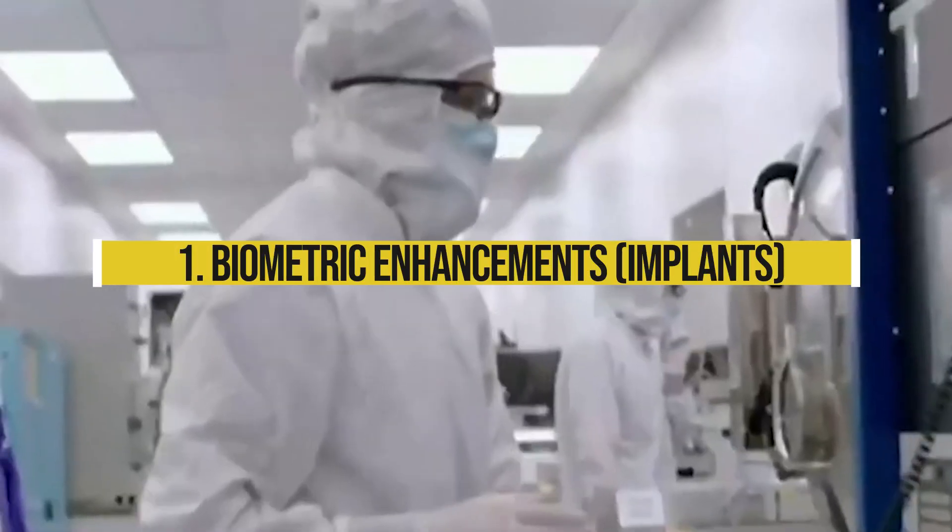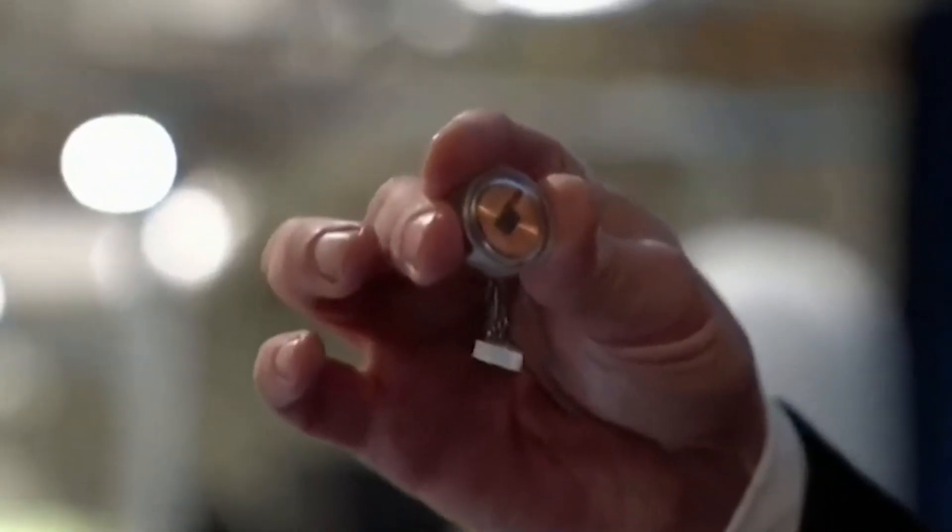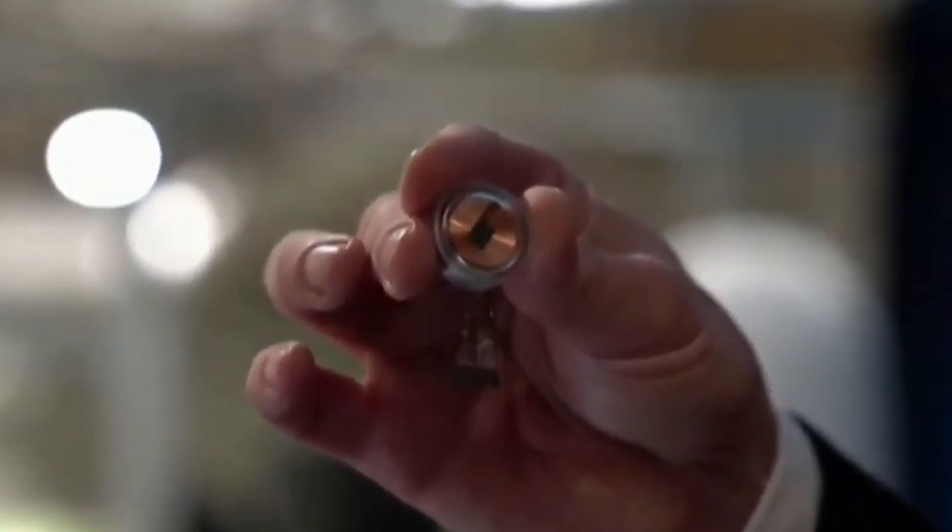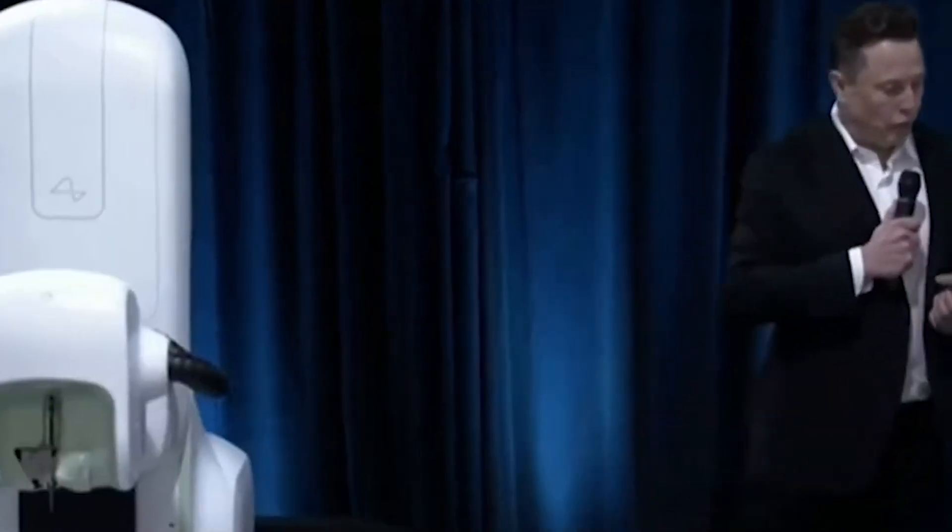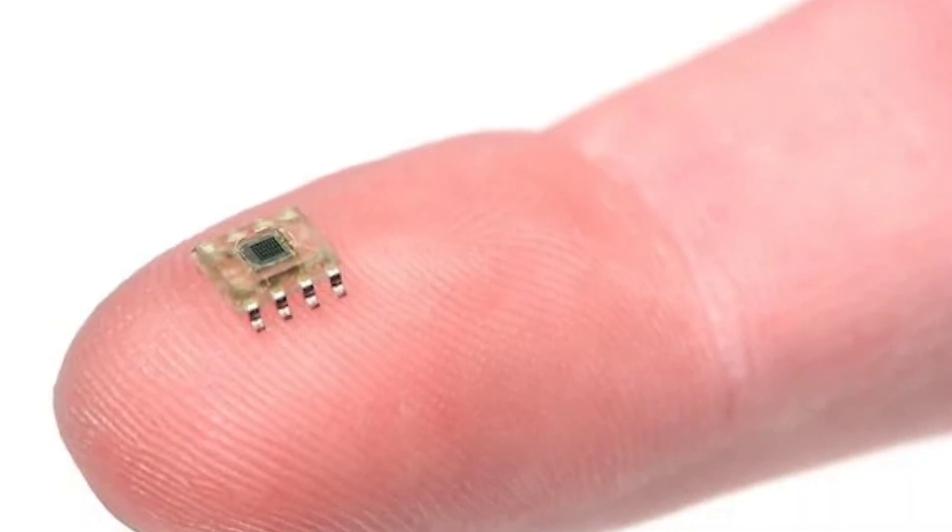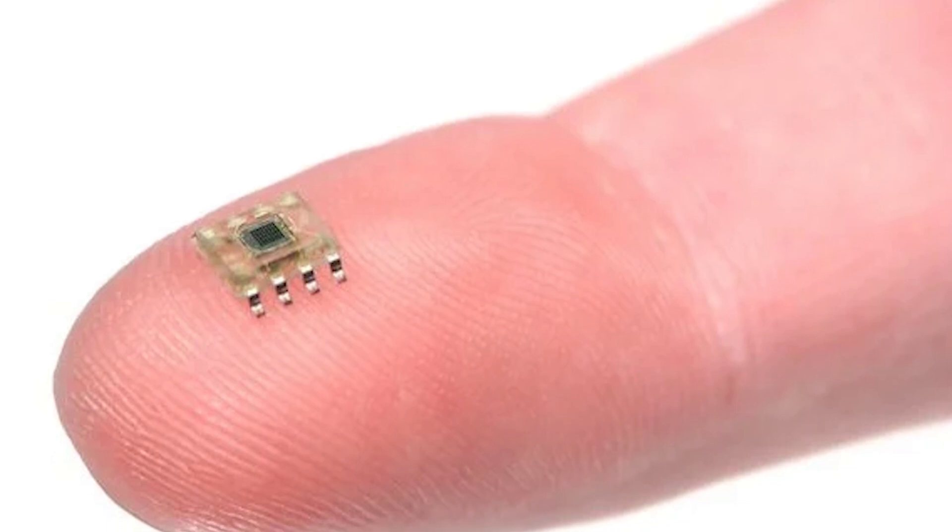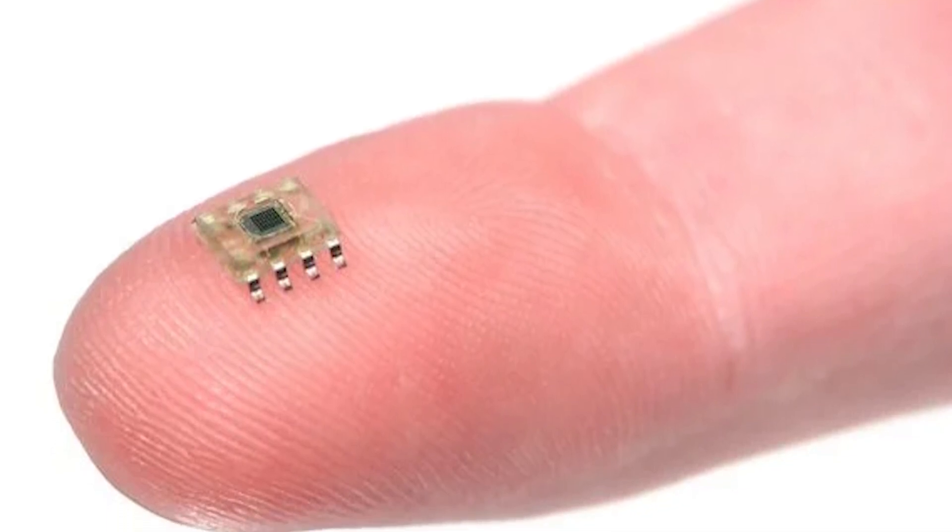Number 1. Biometric enhancements: Implants. Implantable technology is advancing rapidly, allowing us to monitor health, enhance cognitive functions, and even store information within our bodies. Biometric implants, like smart chips, can track vital signs, detect illness, and provide real-time health updates.